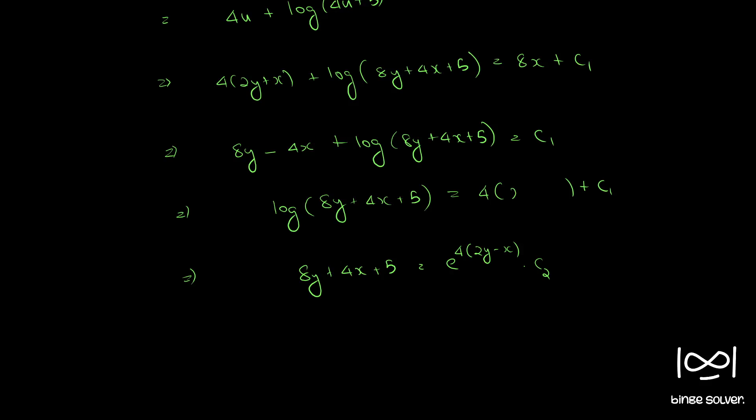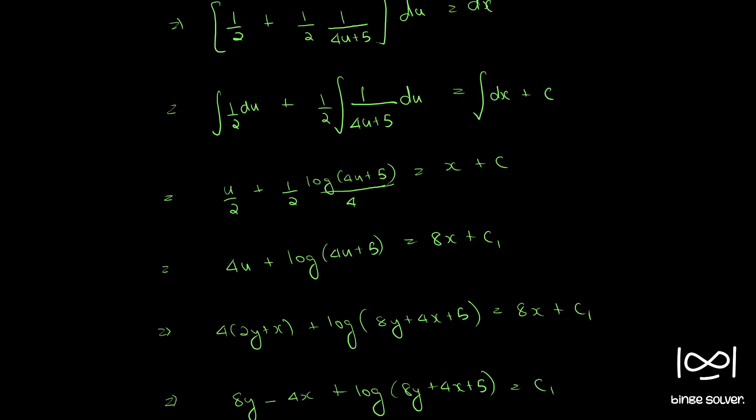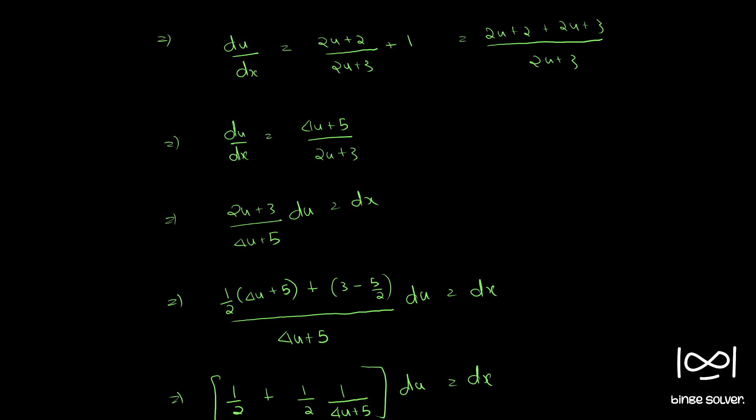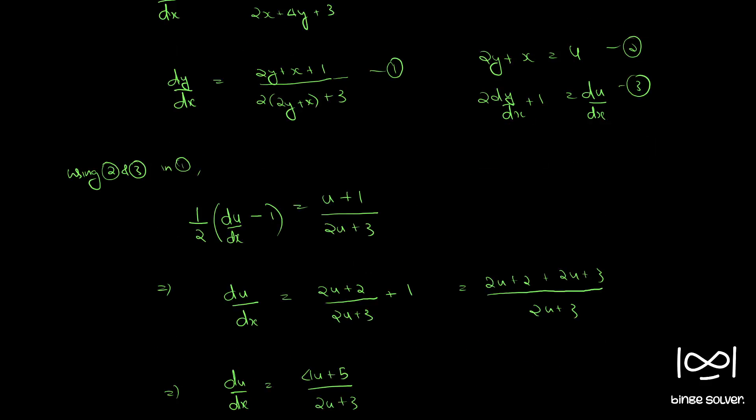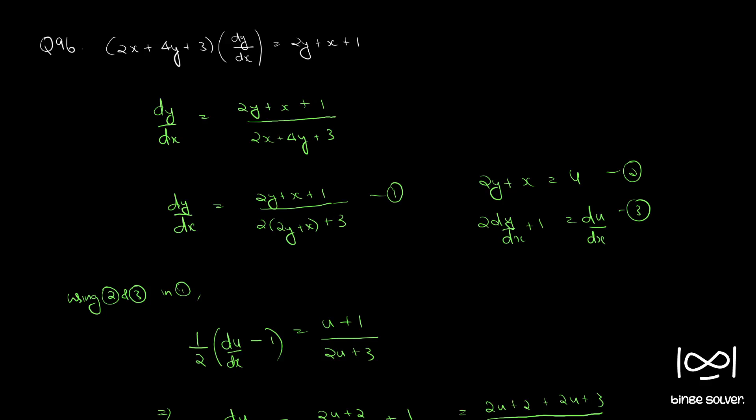So this becomes 4 into x minus 2y, so 4 into x minus 2y times c. This is the final solution, these are the steps. This is the solution to question number 96.